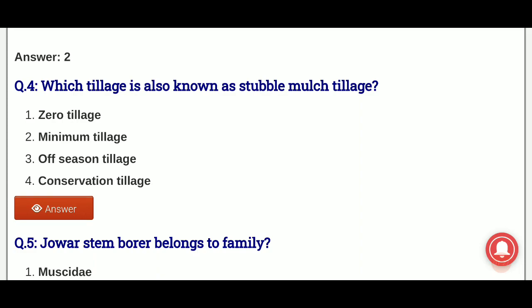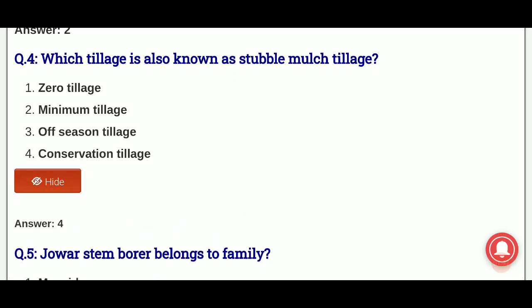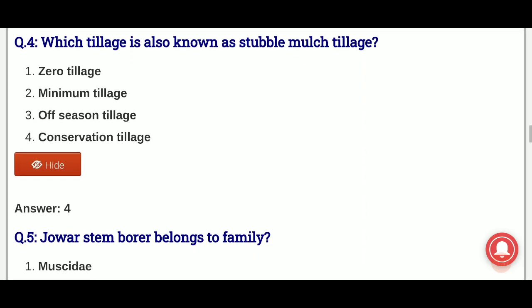Fourth question: which tillage is known as stubble mulch tillage? The options are: zero tillage, minimum tillage, off-season tillage, conservation tillage. And the answer is option 4, that is conservation tillage is also known as stubble mulch tillage.